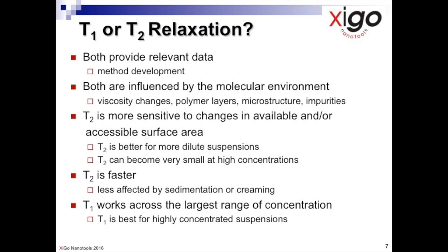T2 values can become very small at very high concentrations, making it difficult to distinguish between samples and so is better for more dilute suspensions. An ideal concentration for T2 measurements would be in the range from about 10% to about 30%. The T2 measurement is technically more difficult but is faster than T1 and so is better for samples in which the solid particles are sedimenting over time or in emulsions where the droplets are creaming.